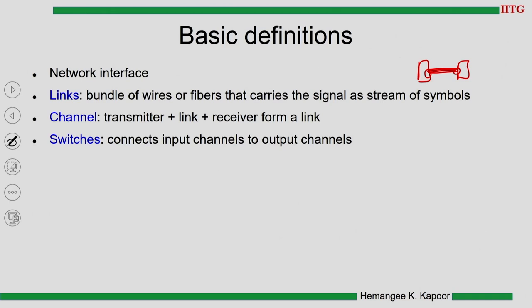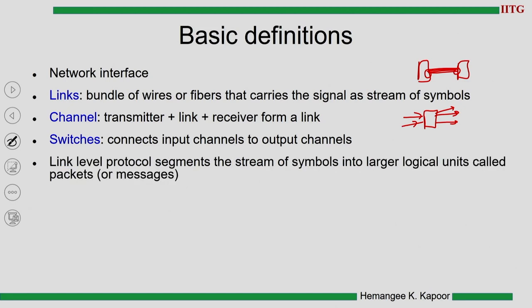A switch connects input channels to output channels — it is a box which connects a certain number of input channels to some number of output channels. The link-level protocol is the way information is transferred over the link: electric signals or a stream of symbols move over the wires. These streams of symbols are then constructed into a larger logical unit called a packet. So overall, we send signals on these wires, and the link-level protocol gives meaning to these values by combining them into larger logical units such as packets or messages. There are different levels of these logical units, and the link-level protocol decides that.